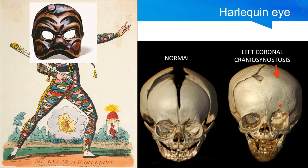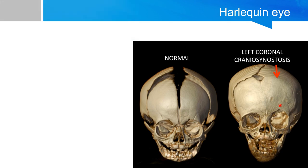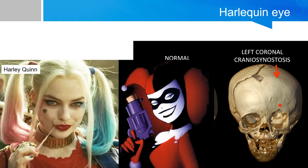The term 'harlequin eye' is derived from the appearance of the eyes on the harlequin mask with their exaggerated superorbital margin. The harlequin is a character in Italian improvised drama performed by masked players, but if you're not much of a literature buff, you may recognize it from another character whose name also originated from this Italian character.